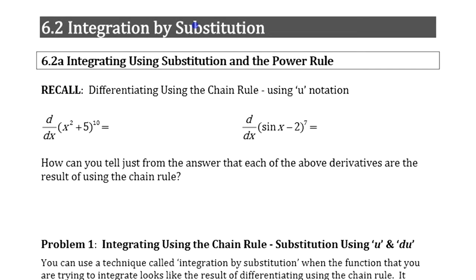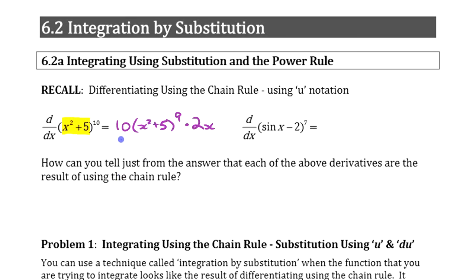When we looked at evaluating things with the chain rule, we had functions that were compositions of functions — a function of a function. You have an inside function and then another function of that. When we did the chain rule, we kind of ignored what was inside and said this is going to be 10 times that to the 9th, then multiplied by the derivative of that inside function, 2x. So you had these two pieces: the outside derivative with respect to the inside, and then the inside with respect to x — that extra piece.